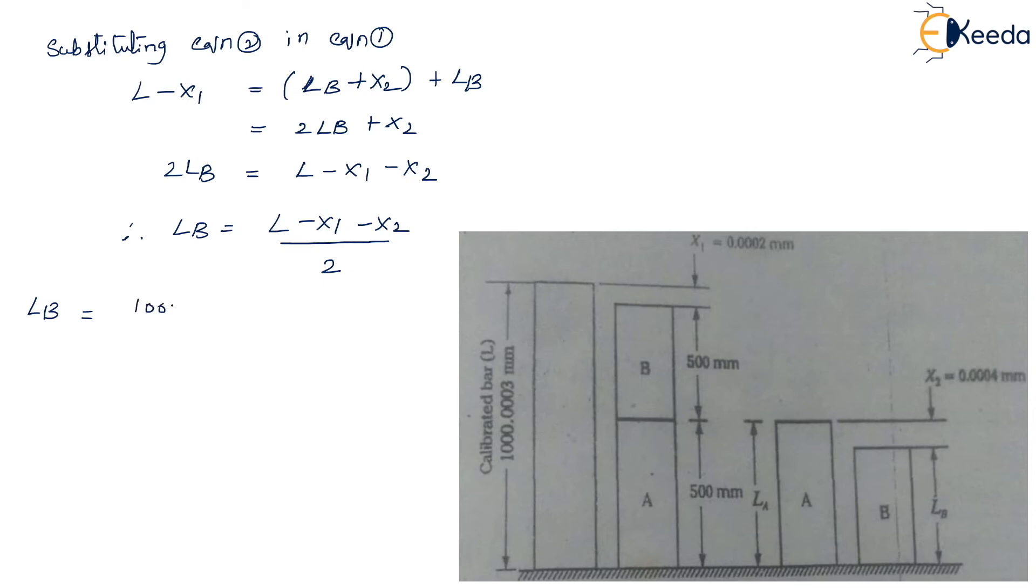Now substituting the values. LB is equal to 1000.0003 minus 0.0002 minus 0.0004 divided by 2. So LB we get the value as 499.9985 mm. So this is the actual length of bar B.